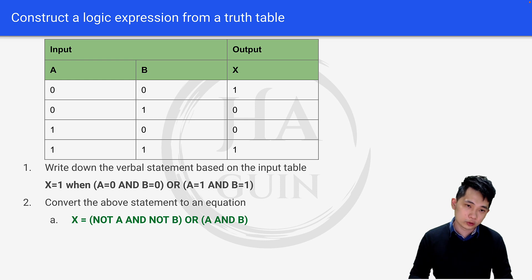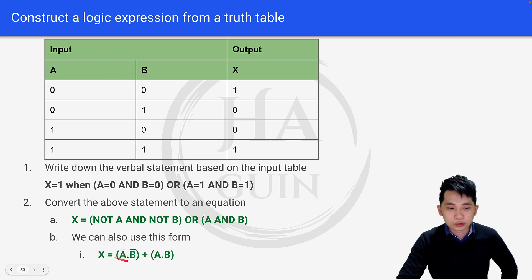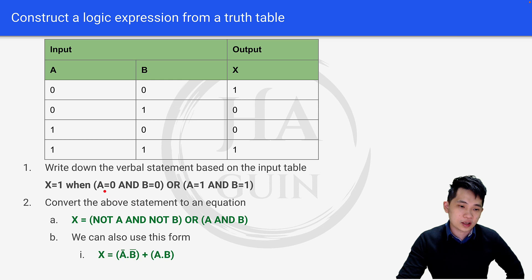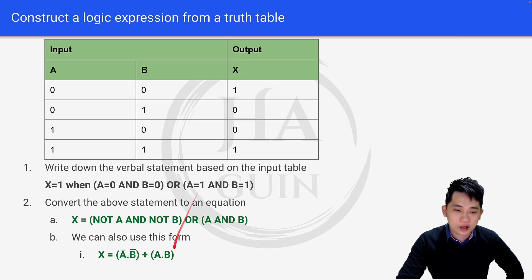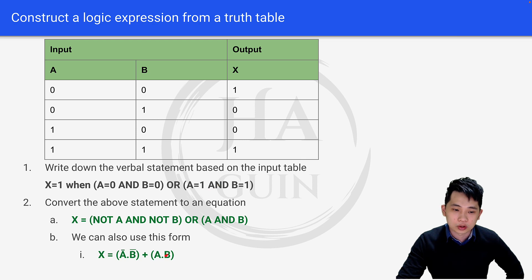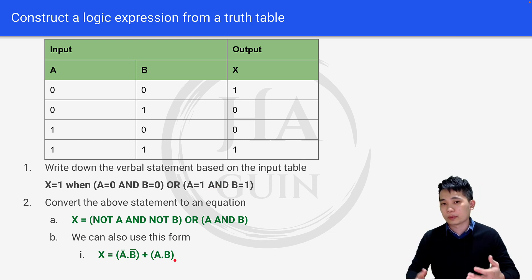We can also use dot notation for this. So we can write x equals (a-inverse dot b-inverse) plus (a dot b), where the dot represents AND, plus represents OR, and the inverse bar represents NOT. You can use this form as well.